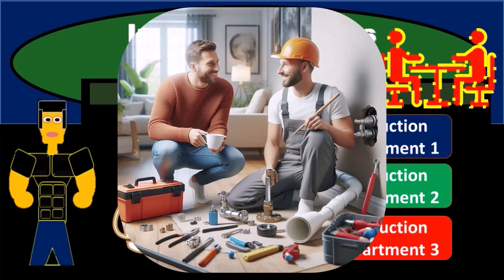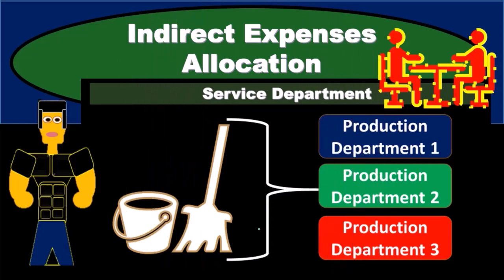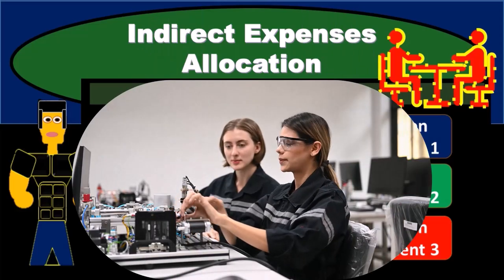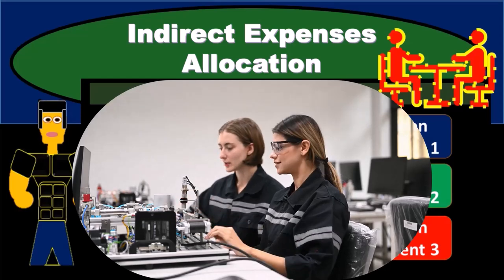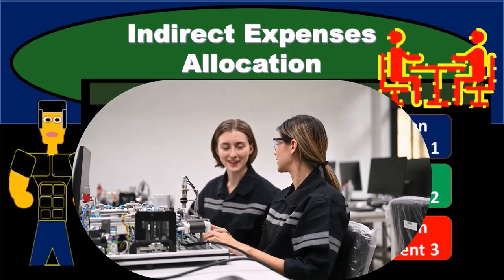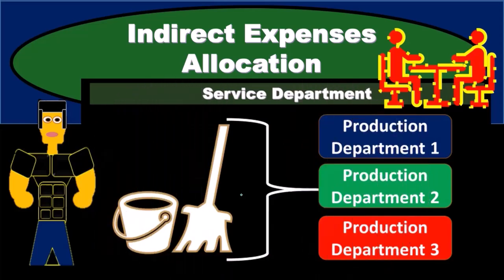However, square footage might not be the best activity base to use for other types of activities. Therefore, our goal when we have allocations such as this is to determine what it is we're trying to allocate, figure out what an appropriate activity base would be — something that we can use on a percentage basis — and then use those related percentages to allocate.